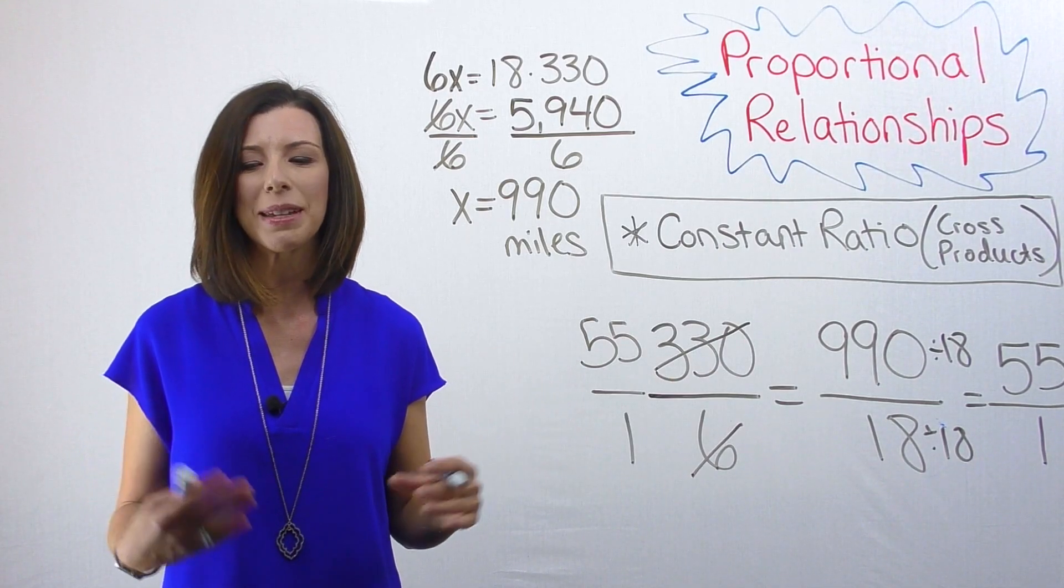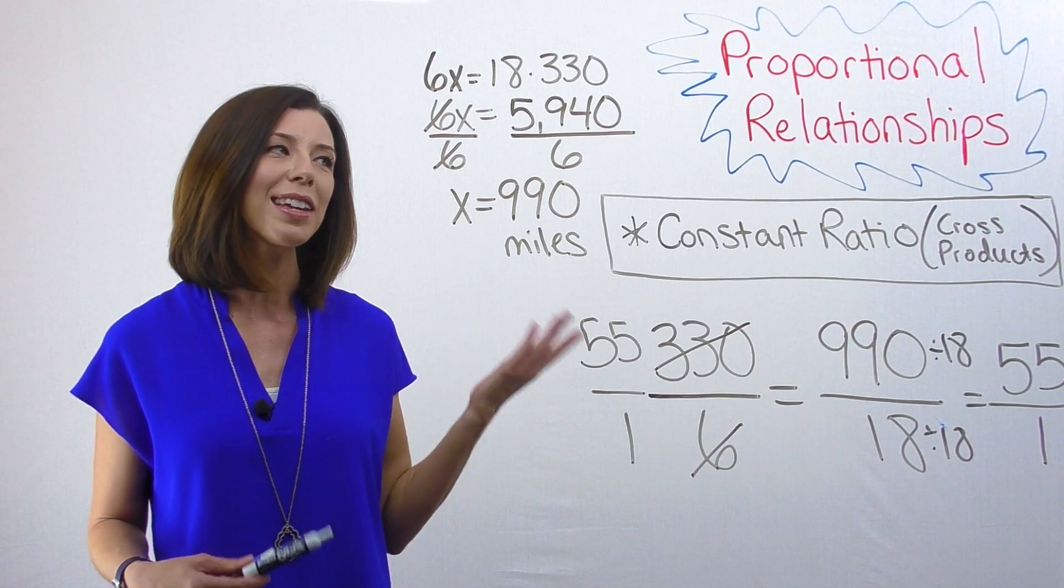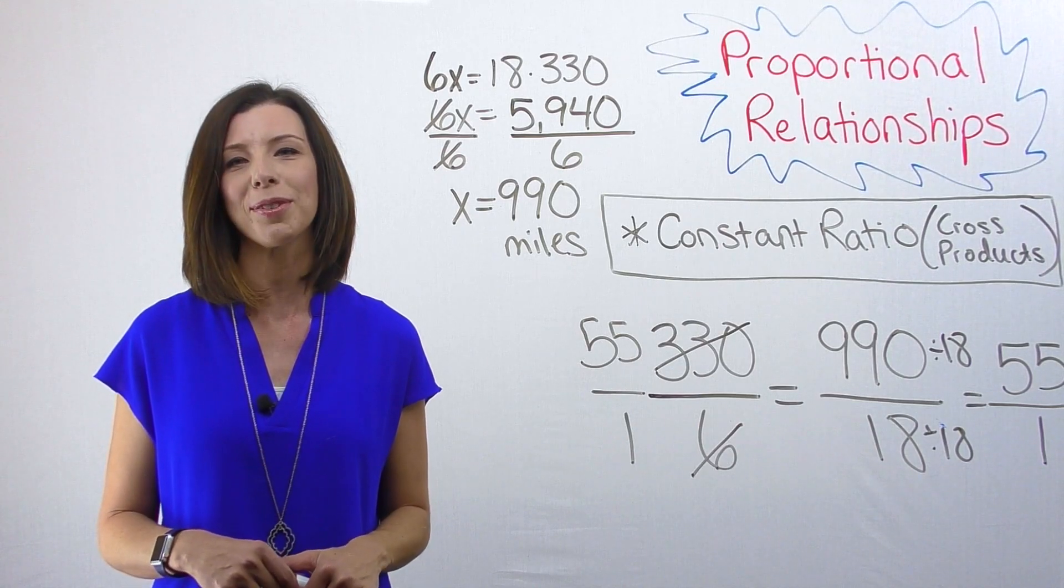Again, it makes sense in this case because he's driving 55 miles per one hour. I hope that gives you a better idea of how to think about your three different types of proportional relationships.